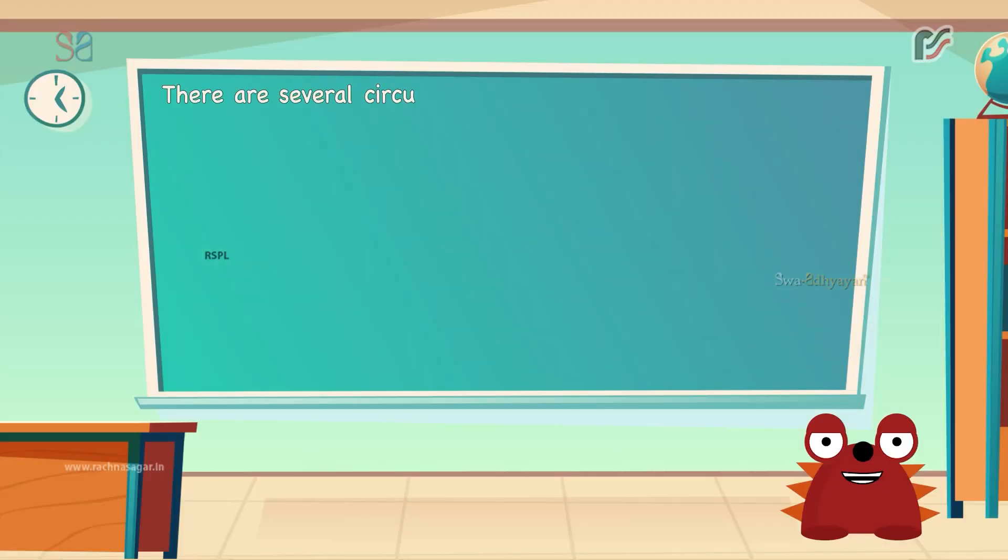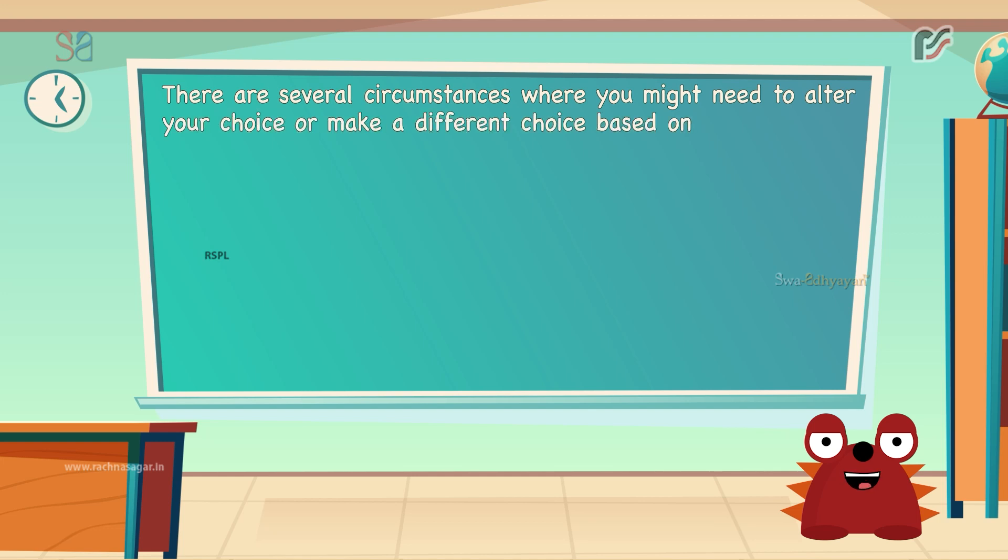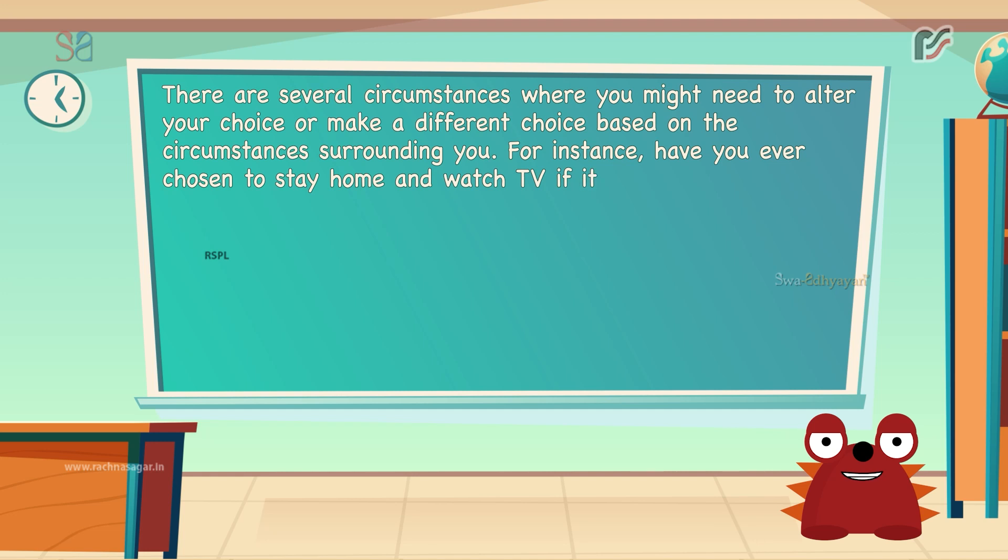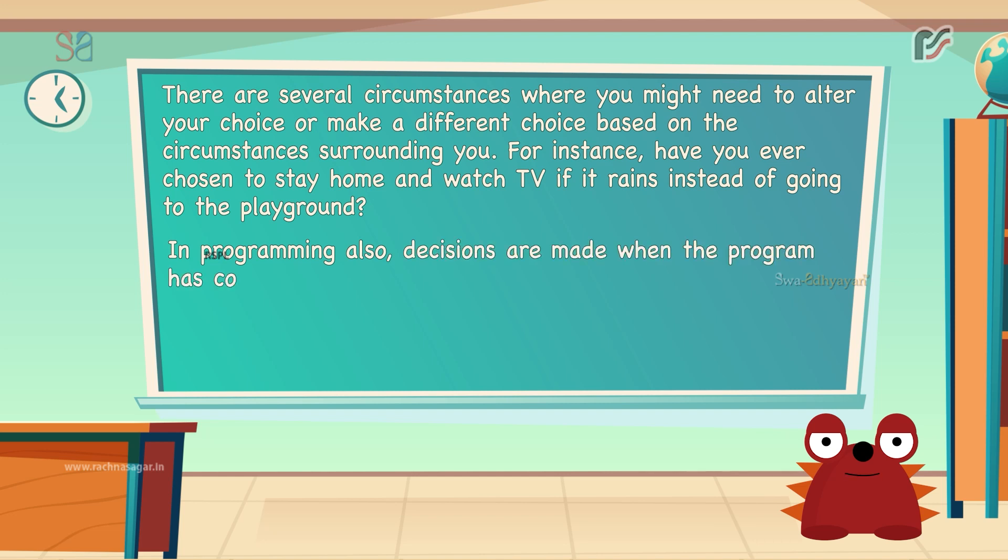Now there are several circumstances where you might need to alter your choice or make a different choice based on the circumstances surrounding you. For instance, have you ever chosen to stay home and watch TV if it rains instead of going out? In programming also, decisions are made when the program has conditional choices to execute a code block.